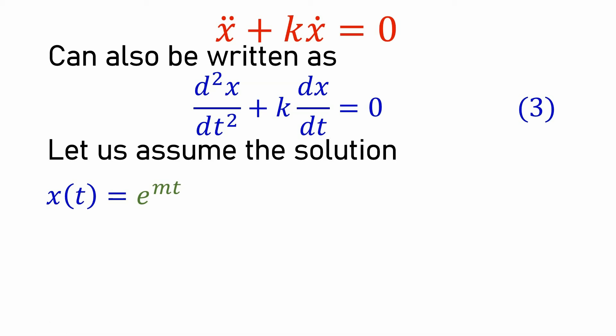This assumed solution has a lot of story behind it, but we won't go into that. The point is that we assume x(t) = e^(mt) to obtain the x(t) which will satisfy equation 3.